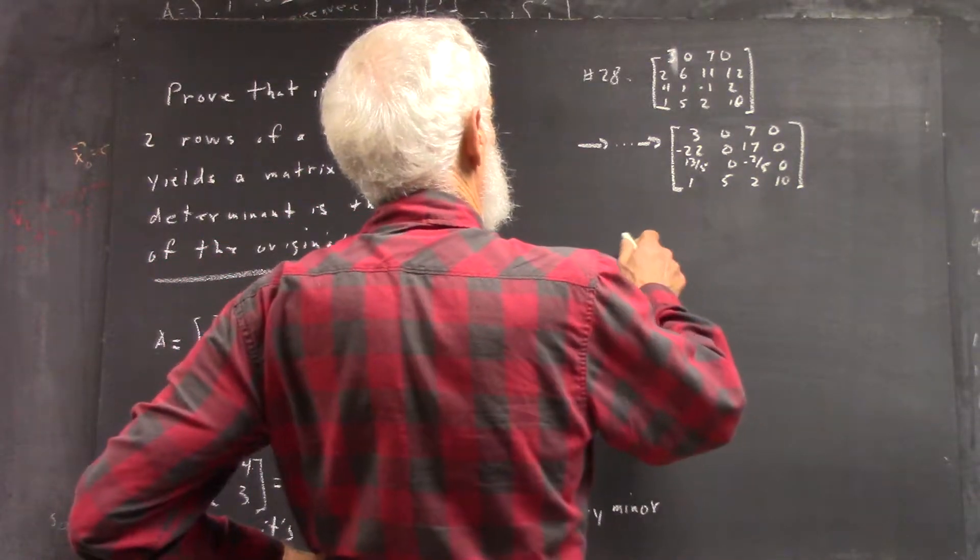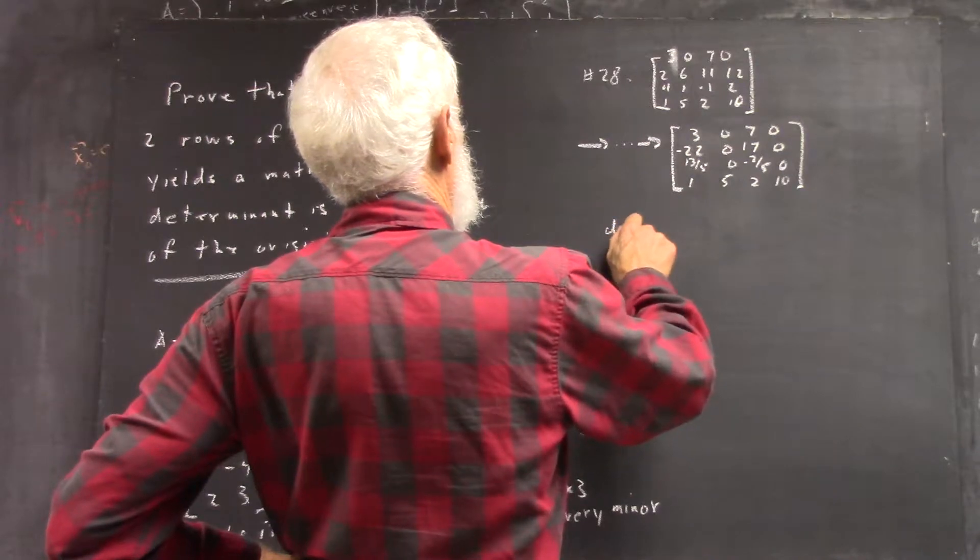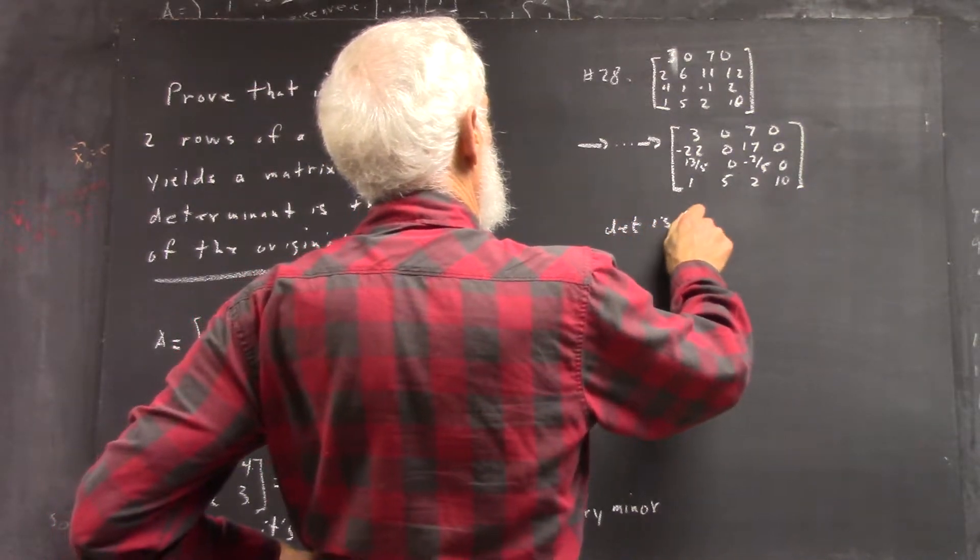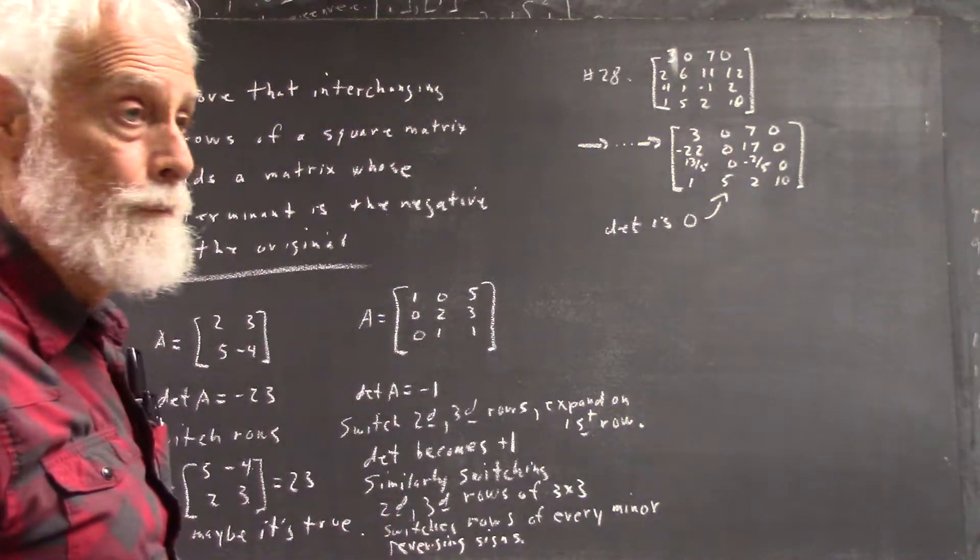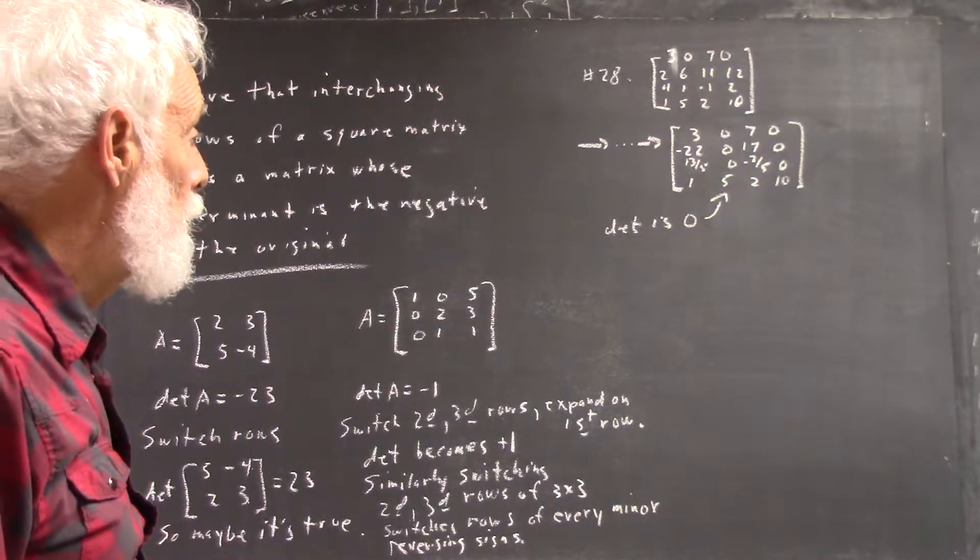So the determinant of this is zero. And how do we know that?